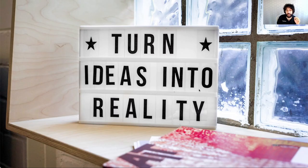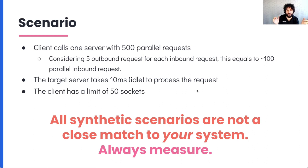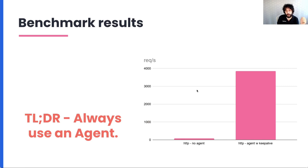Let's turn the idea into reality. One of the scenarios I'm going to test involves doing 500 parallel requests to one server, which in turn does another five requests to other microservices. The server takes 10 milliseconds to process the request, and the client has a limit of 50 sockets. Don't worry too much about the exact numbers — do your own measurements. But the difference is staggering: if you don't do keep-alive, you will be in very, very huge trouble.